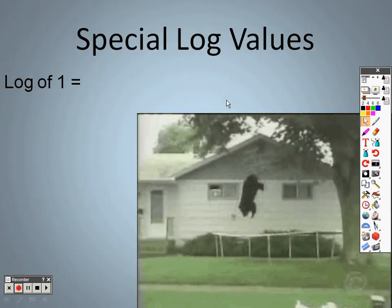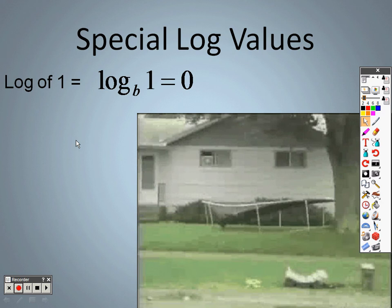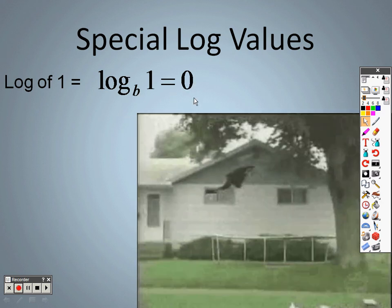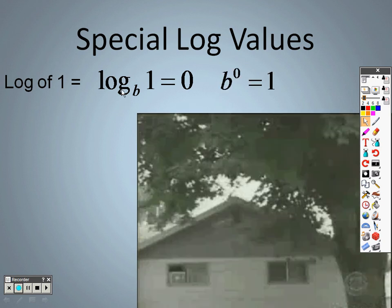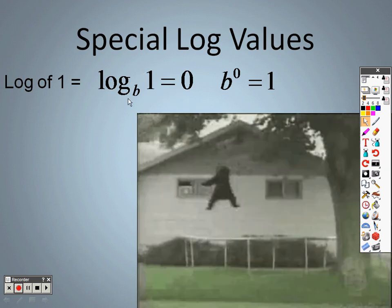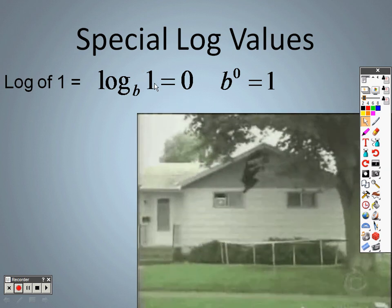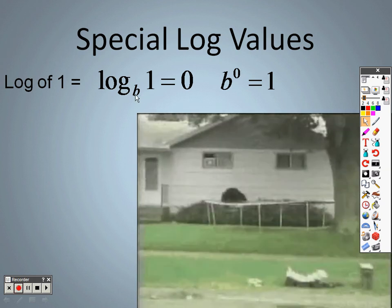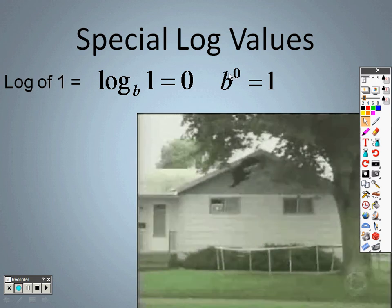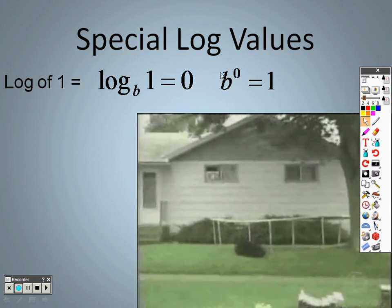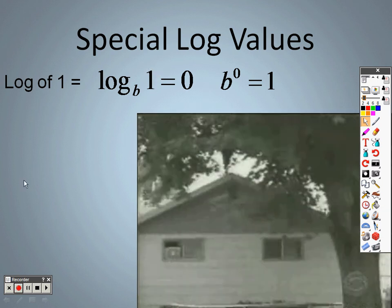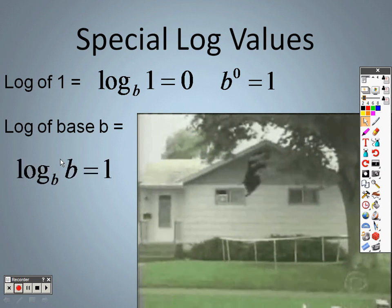There are some special log values to keep in mind. Log base b of one equals zero — when you rewrite that, it's b to the zero equals one. The reason is that anything to the zero power equals one. So if you have a one inside the log, your answer is going to be zero, and it doesn't matter what base b is.